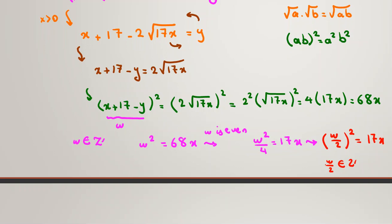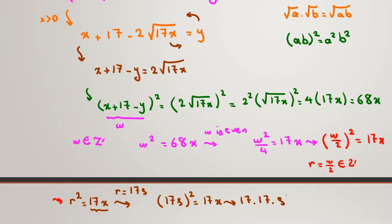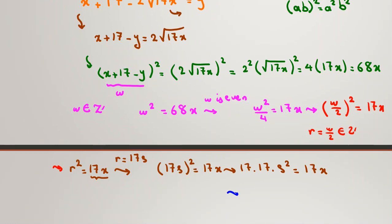You can consider w/2 as, for example, r. So we conclude r² = 17x. Here we conclude, because x, this part 17×x should be perfect square, because r² is perfect square. Here we can conclude right hand side is multiple of 17, so left hand side is also multiple of 17. So you can say r = 17s. If you replace, (17s)² = 17x. So 17×17×s² = 17x. If we divide both sides by 17 here, we can conclude 17s² = x.